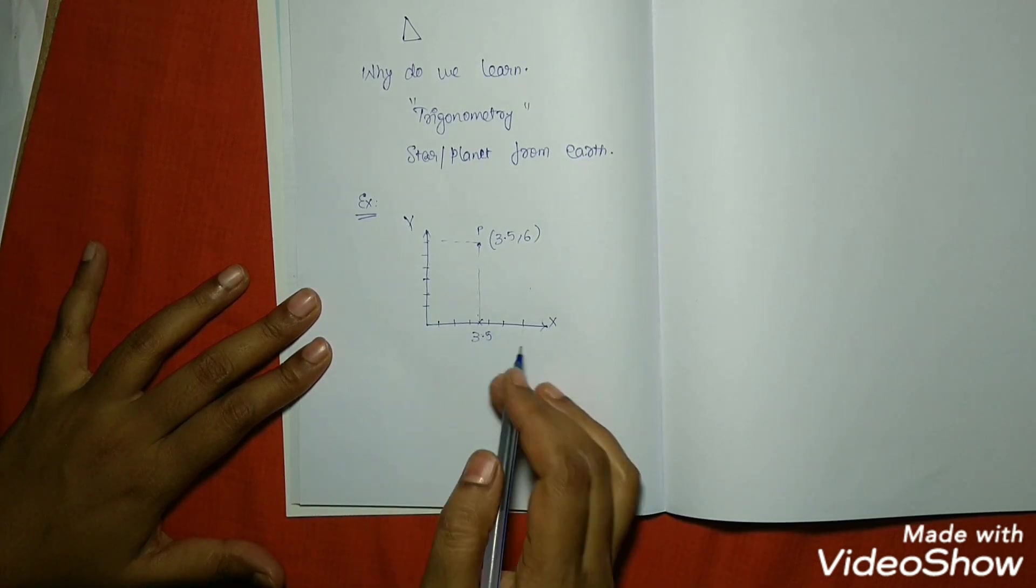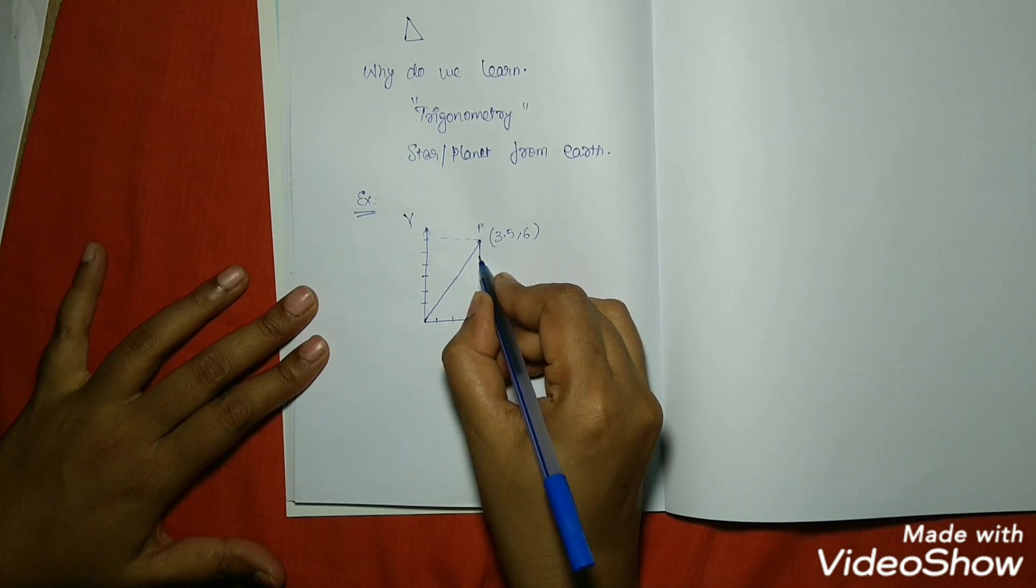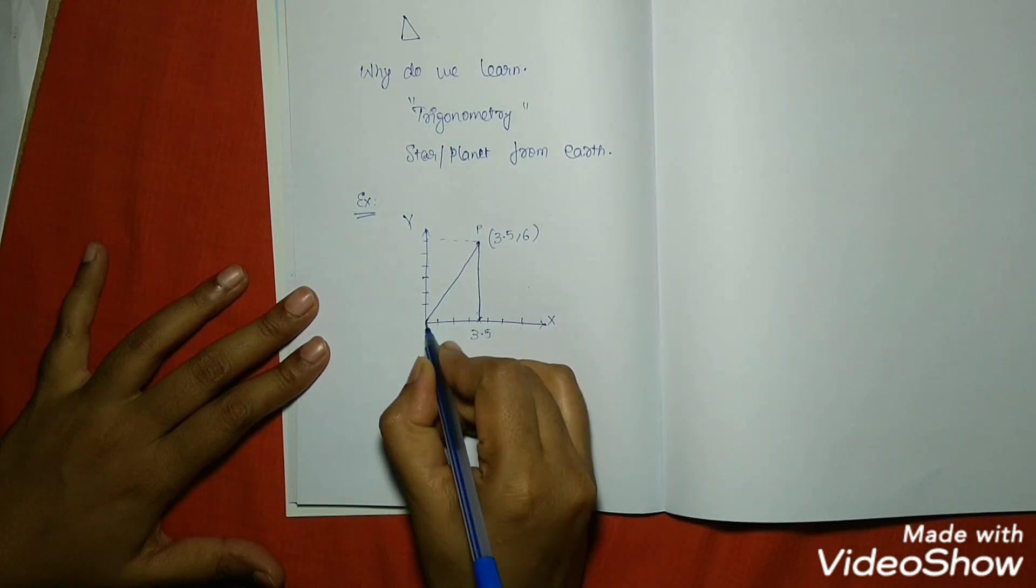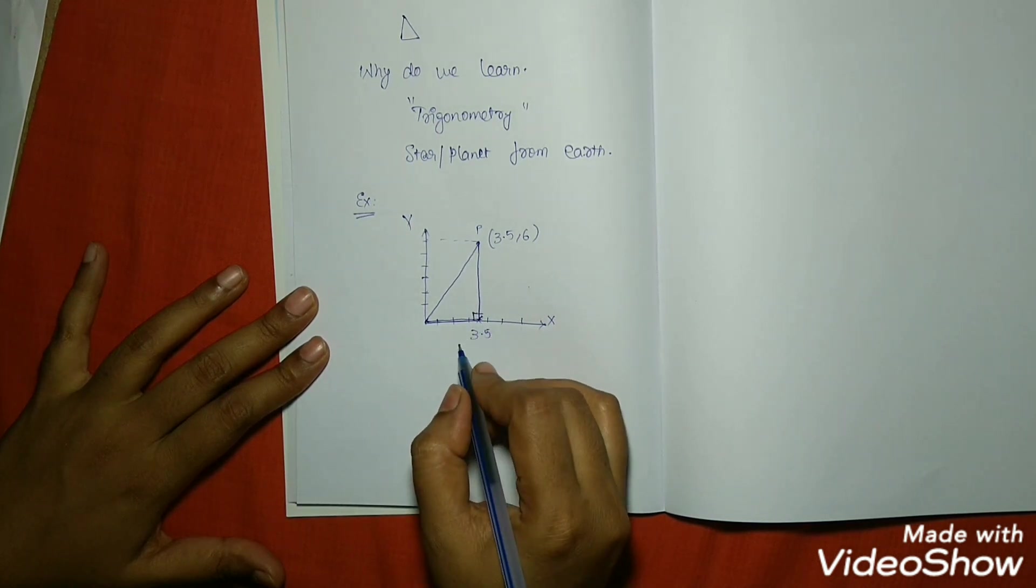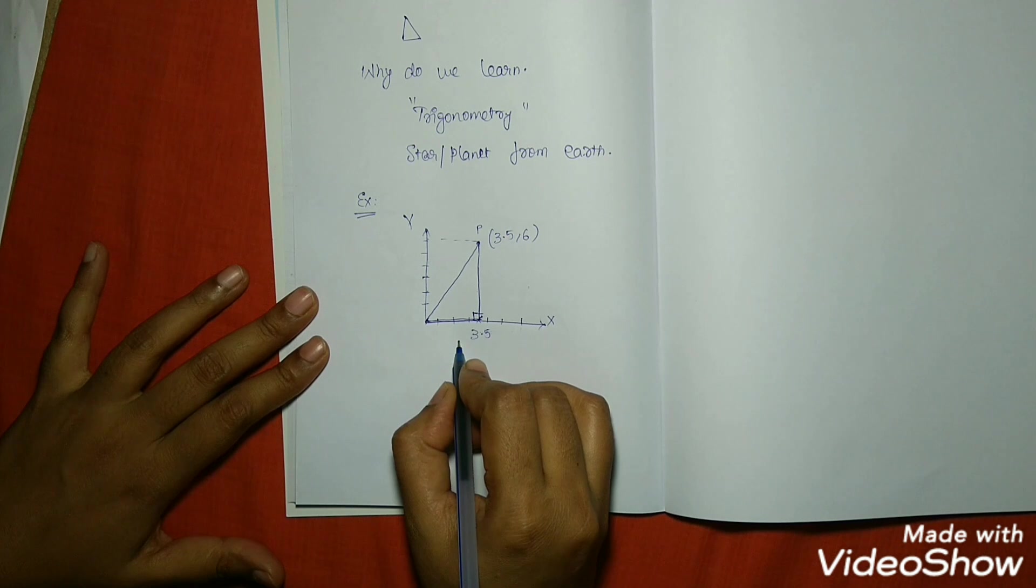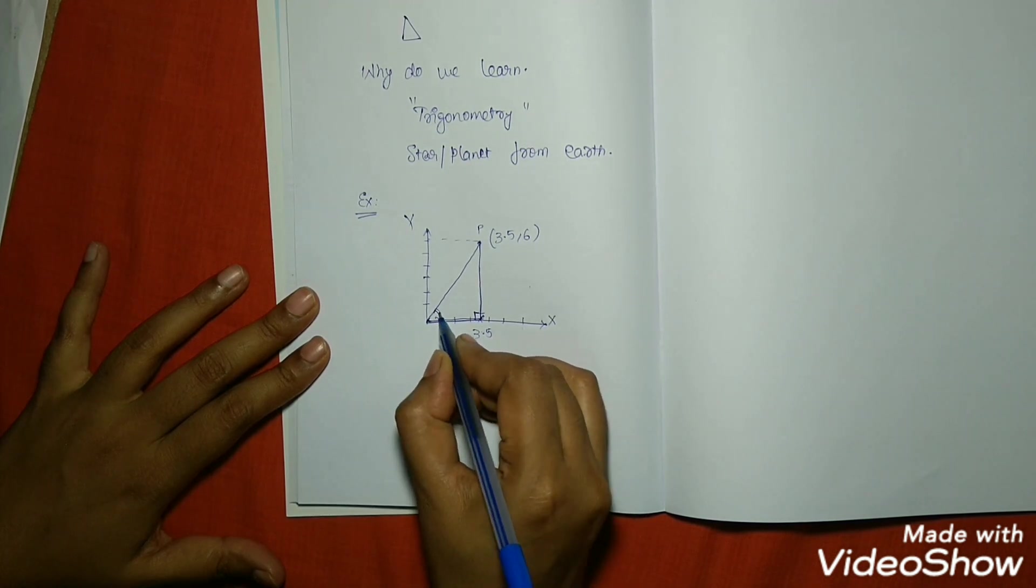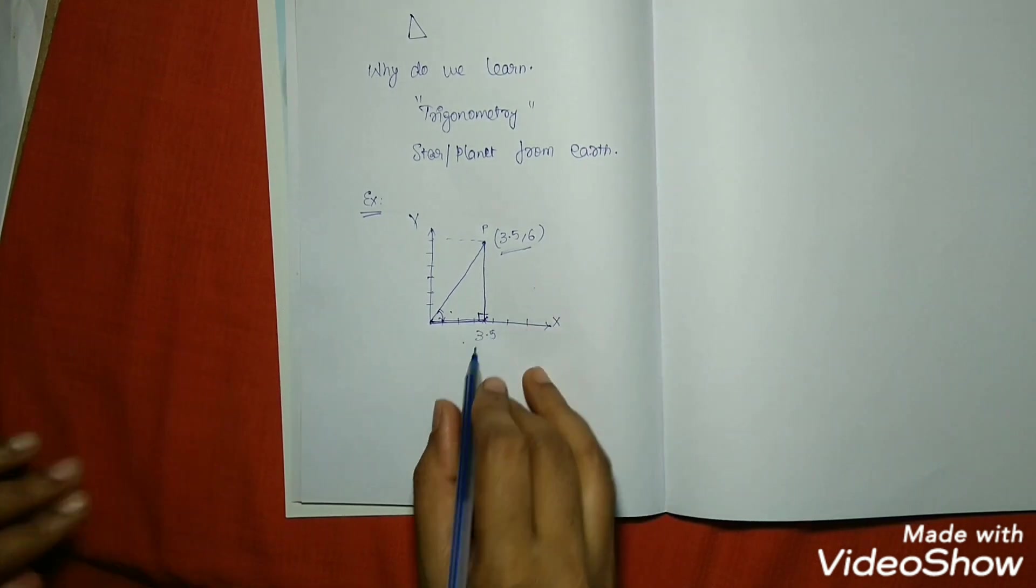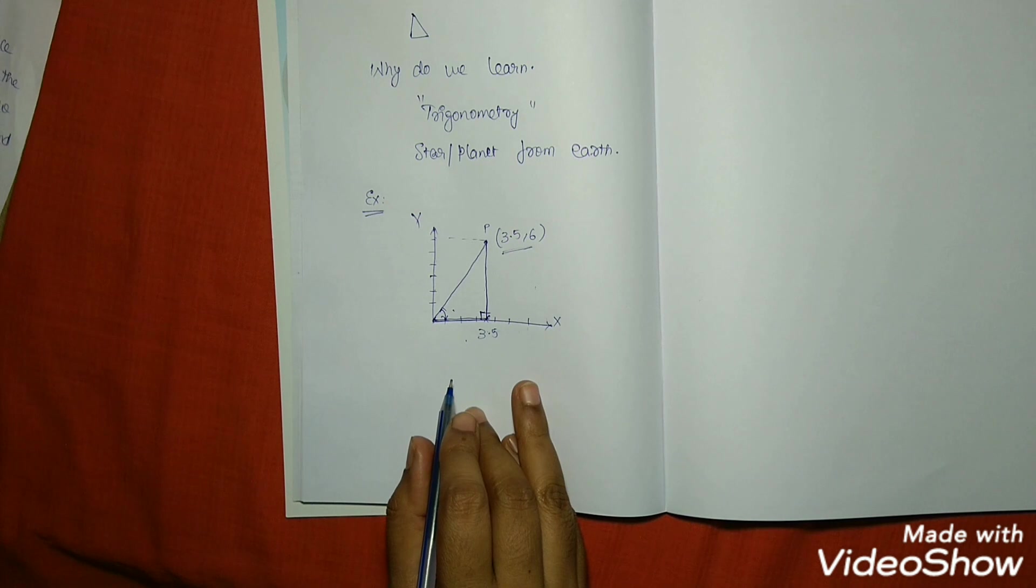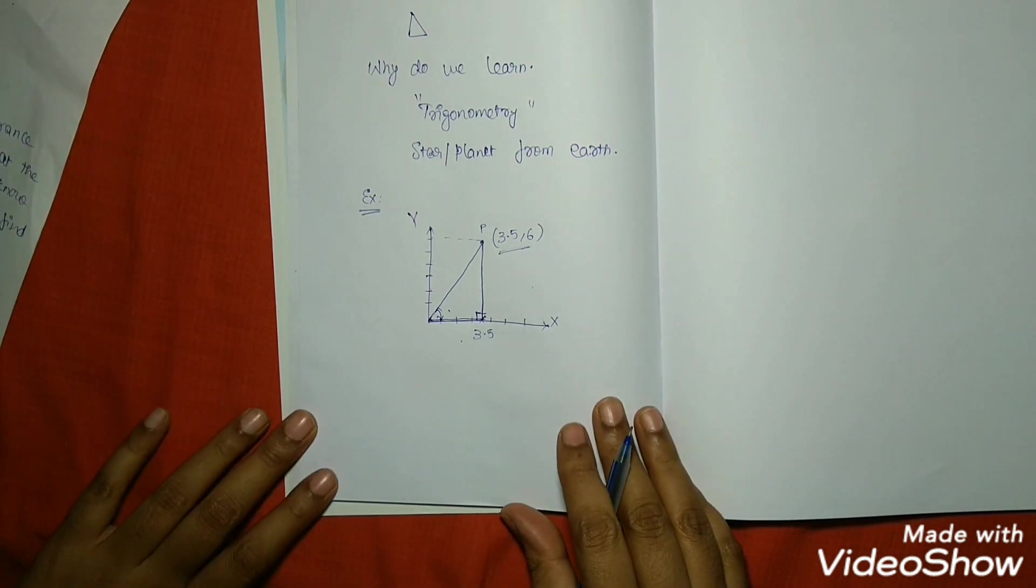Suppose if there is no scale. From the origin to the point, if I join here, it is forming a right angle triangle. If you do not know the X coordinate or Y coordinate, if you simply know the angle, we can find out the position of this point using trigonometry. This is one example where we are using trigonometry.